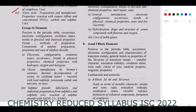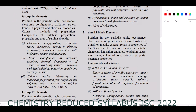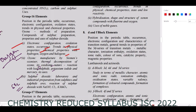For Group 16: electronic configuration, oxidation state, occurrence, physical and chemical properties, reaction with hydrogen, oxygen, and halogens, and ozone are present. However, oxygen as a compound and its preparation are removed. For sulfur: sulfur dioxide is present, but sulfuric acid and the various oxo acids of sulfur (including their structures) are completely removed.